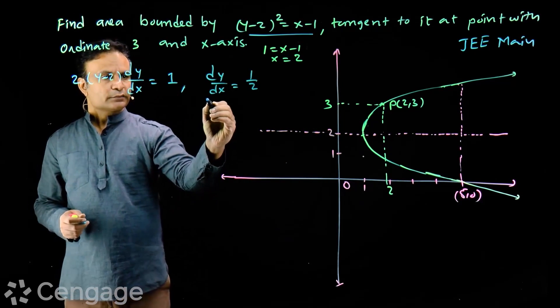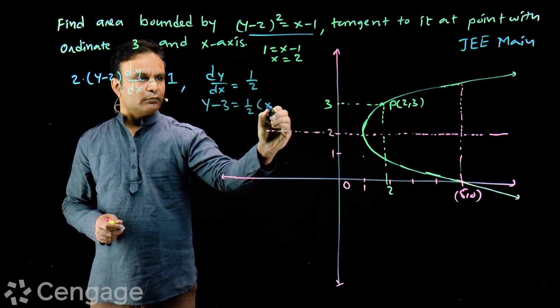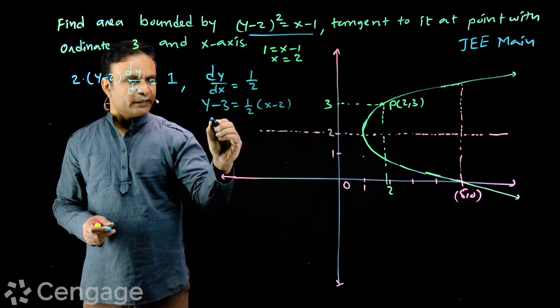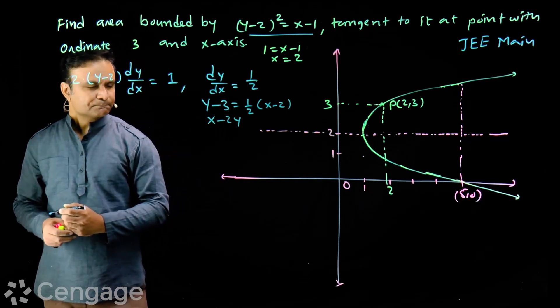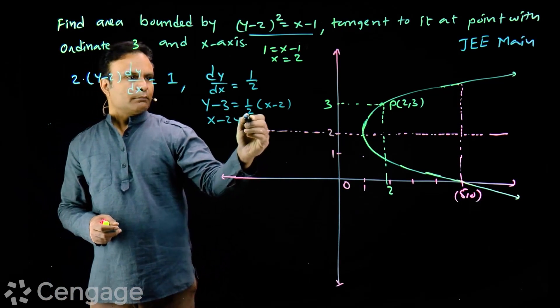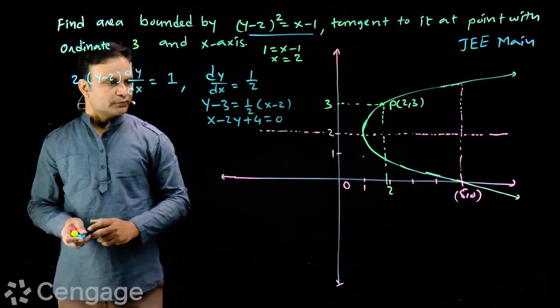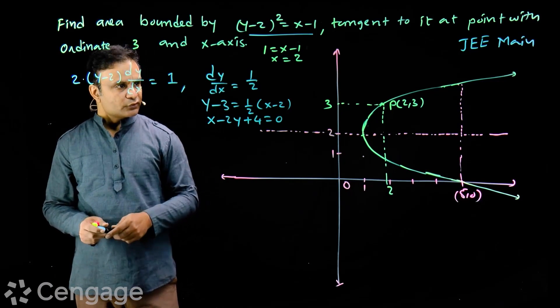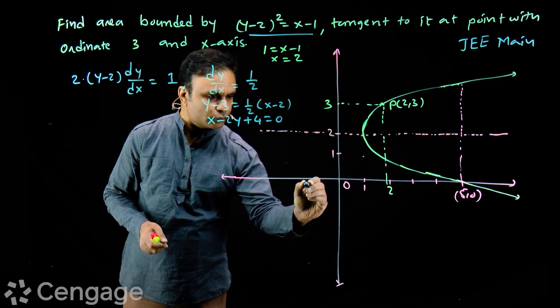Equation of tangent is y-3 = (1/2)(x-2). Simplifying we get x - 2y + 4 = 0. Check the calculations once. When y=0, x = -4.